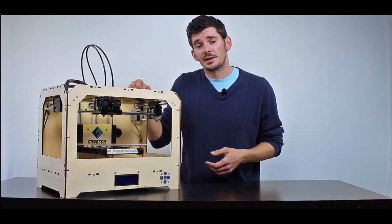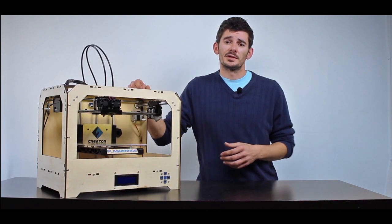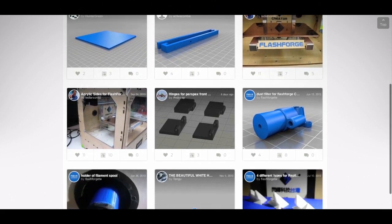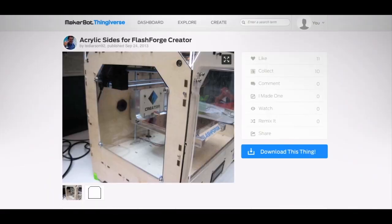Born from the same open source design as the replicator 1, there's a bunch of add-ons and modifications available to download and add to your Creator such as front and side panels to close up the printer and protect it from drafts.